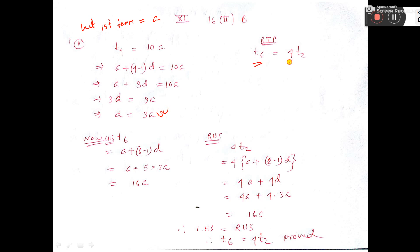The sixth term is a plus 6 minus 1 into d. Since the value of d is 3a, we get 16a. Taking the right hand side, 4 into t2, the t2 formula is a plus 2 minus 1 into d. Put the value of d here also, and you get 16a.